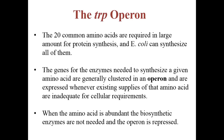There are five genes clustered in an operon, and they are expressed whenever the existing supply of that amino acid is inadequate for cellular requirements. When tryptophan is abundant, the biosynthetic enzymes are not needed and the operon is repressed.